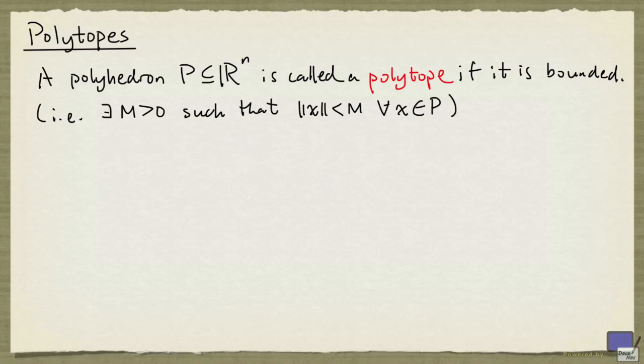A polyhedron P in R^n is called a polytope if it is bounded. That is, there exists a positive number m such that the norm of x is less than m for all x in P.